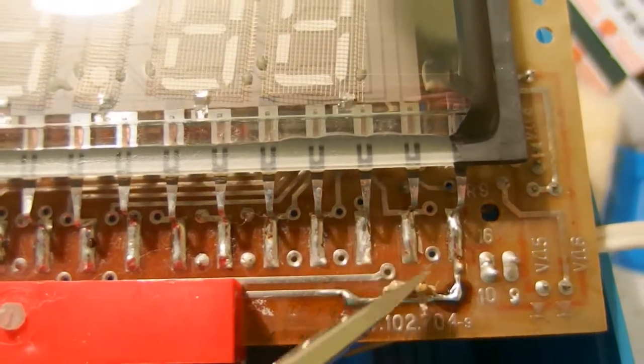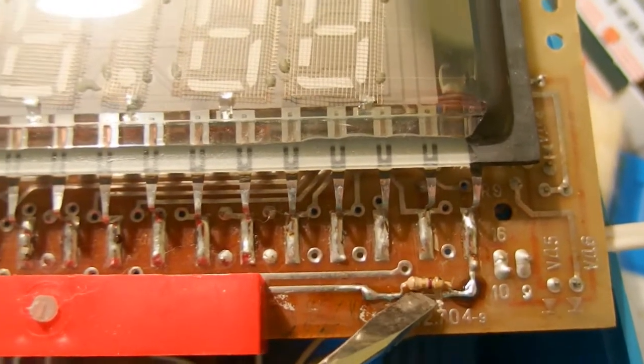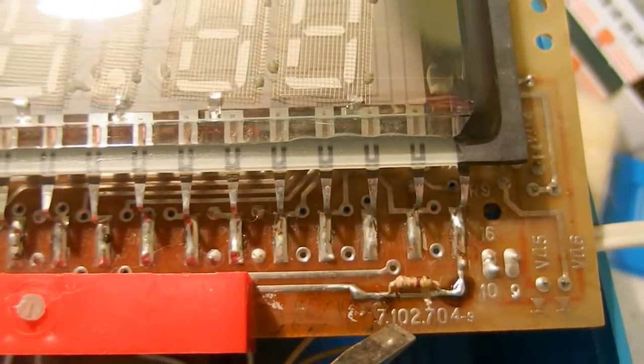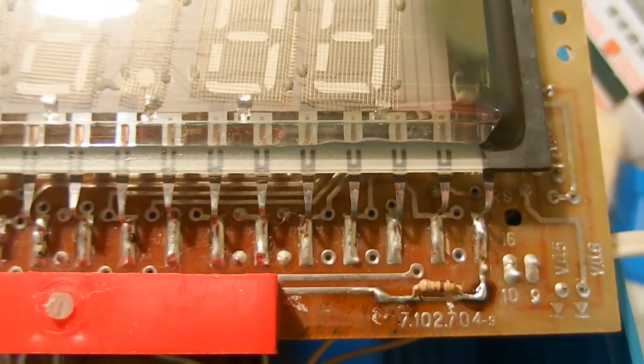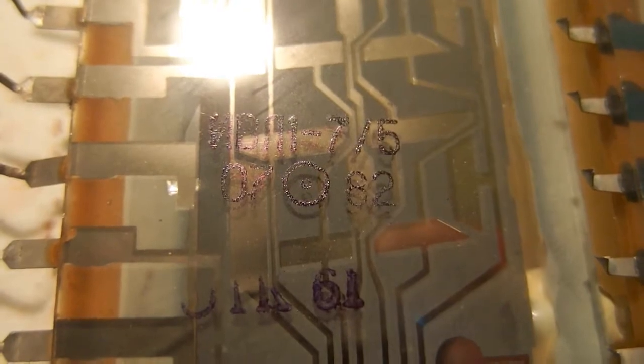I have also added a resistor in series with the heater filament to fine adjust the heater voltage because the heater voltage is critical for life expectancy of the fluorescent display. And those clocks usually have IVL 175 display in it.